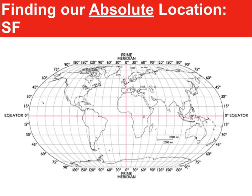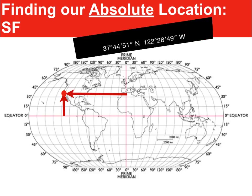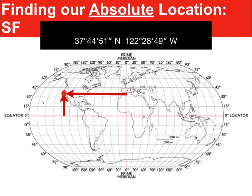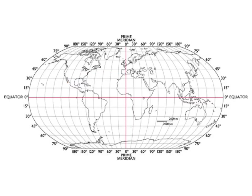So how do we find our absolute location here in San Francisco? First we measure how far north of the equator we are, then we measure how far west of the prime meridian we are. What we get is our absolute location: 37 degrees, 44 minutes, and 51 seconds north; 122 degrees, 28 minutes, and 49 seconds west.